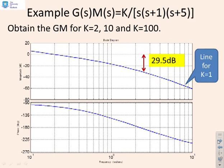Now a different sort of question. Given G of S, M of S is given as K over S, S plus 1, S plus 5. Obtain the gain margin for K equals 2, 10, and 100. And what we've done is we've given you the Bode diagram for K equals 1 and told you that for that particular value of K, you've got 29.5 decibels. Now all I need to do is use exactly the same insight as before.